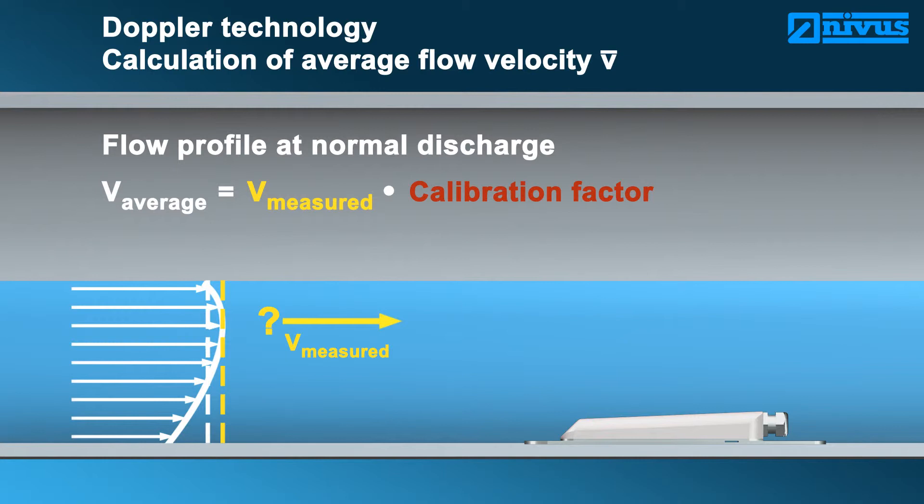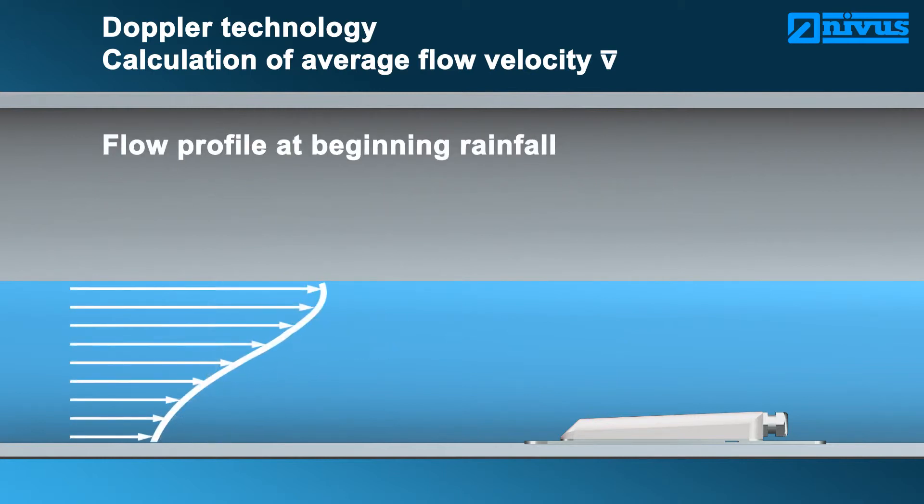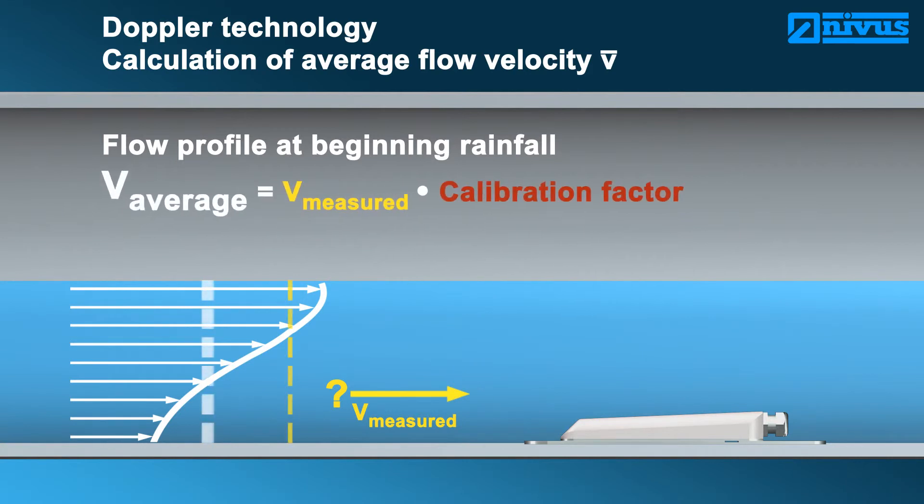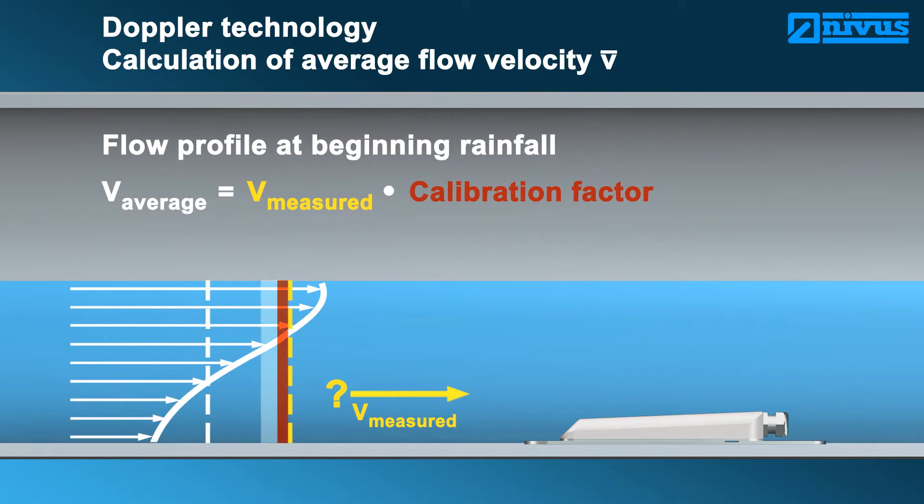The calibration factor is valid only for one stationary condition. If the flow conditions should change, such as due to rainfall, the flow profile will change accordingly. The originally determined calibration factor is no longer applicable and the reading is distorted.